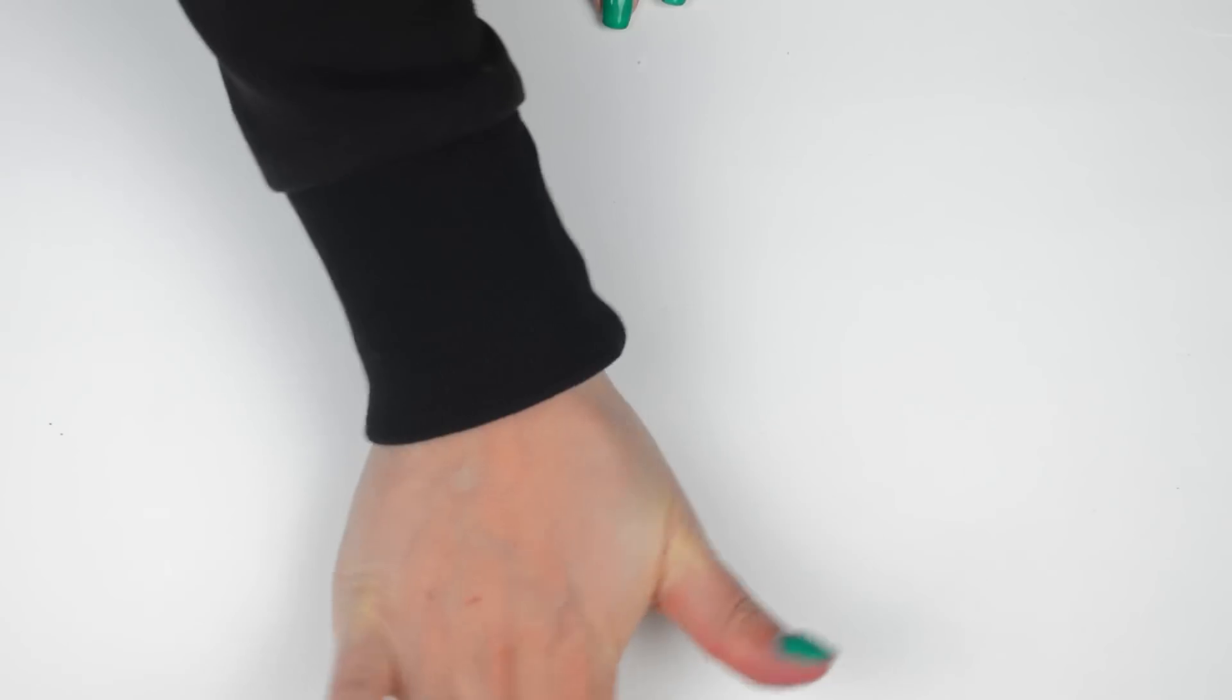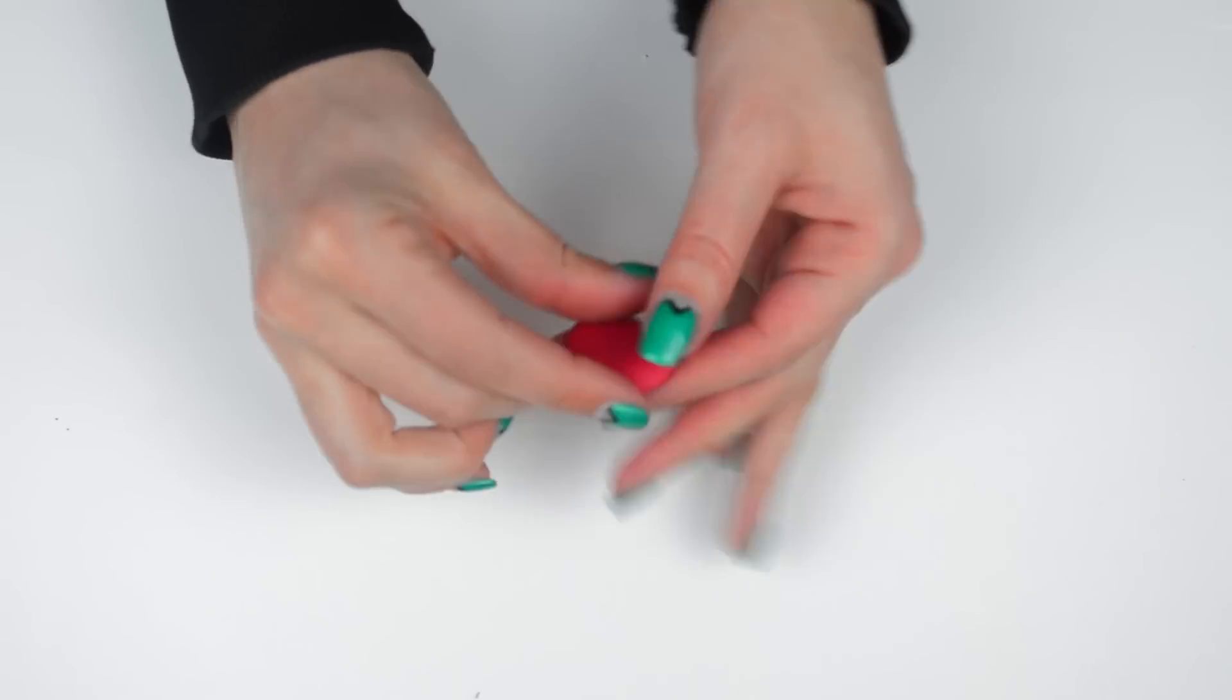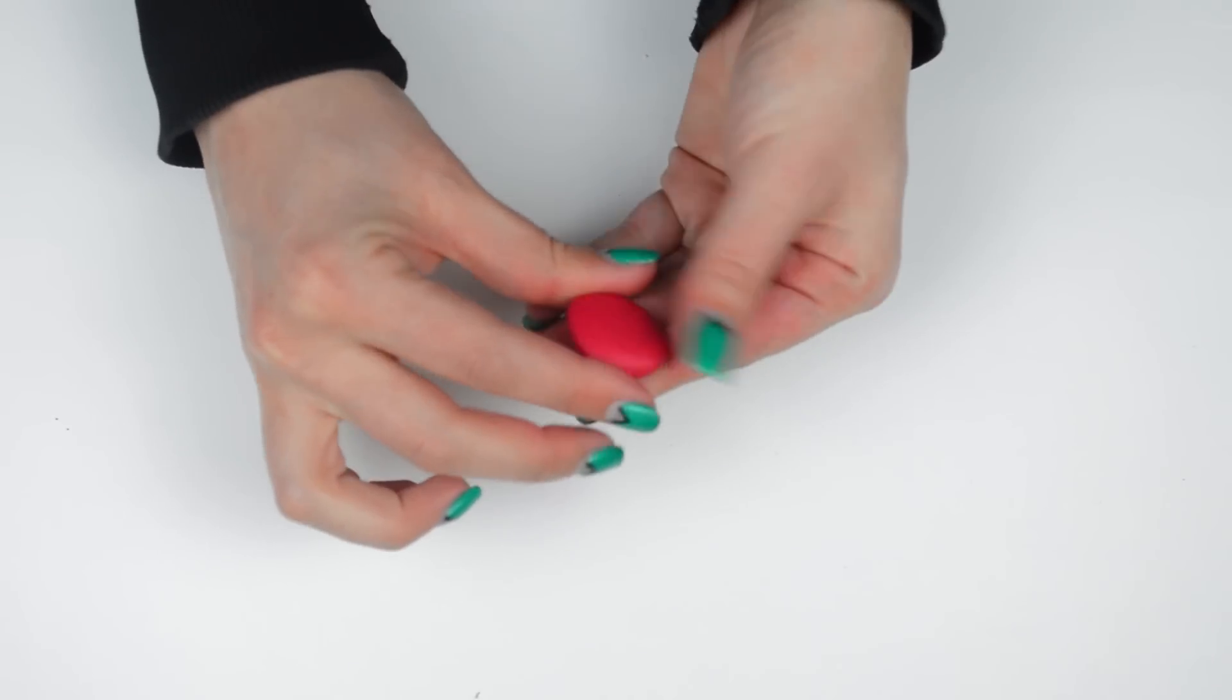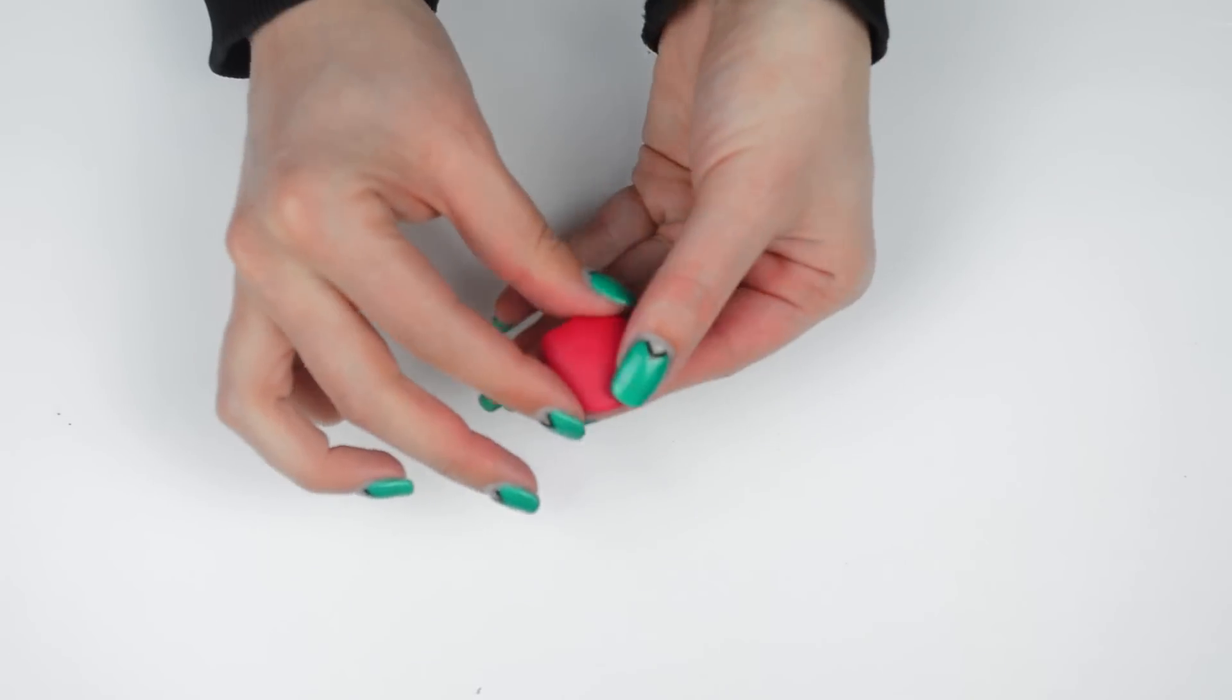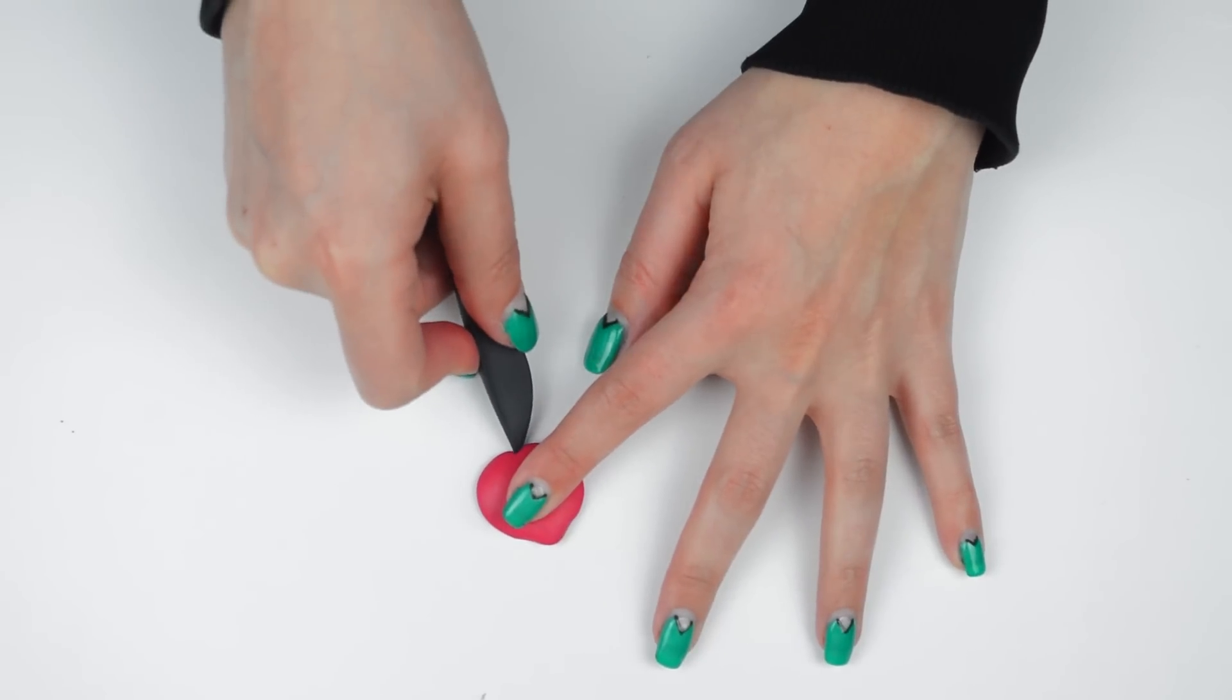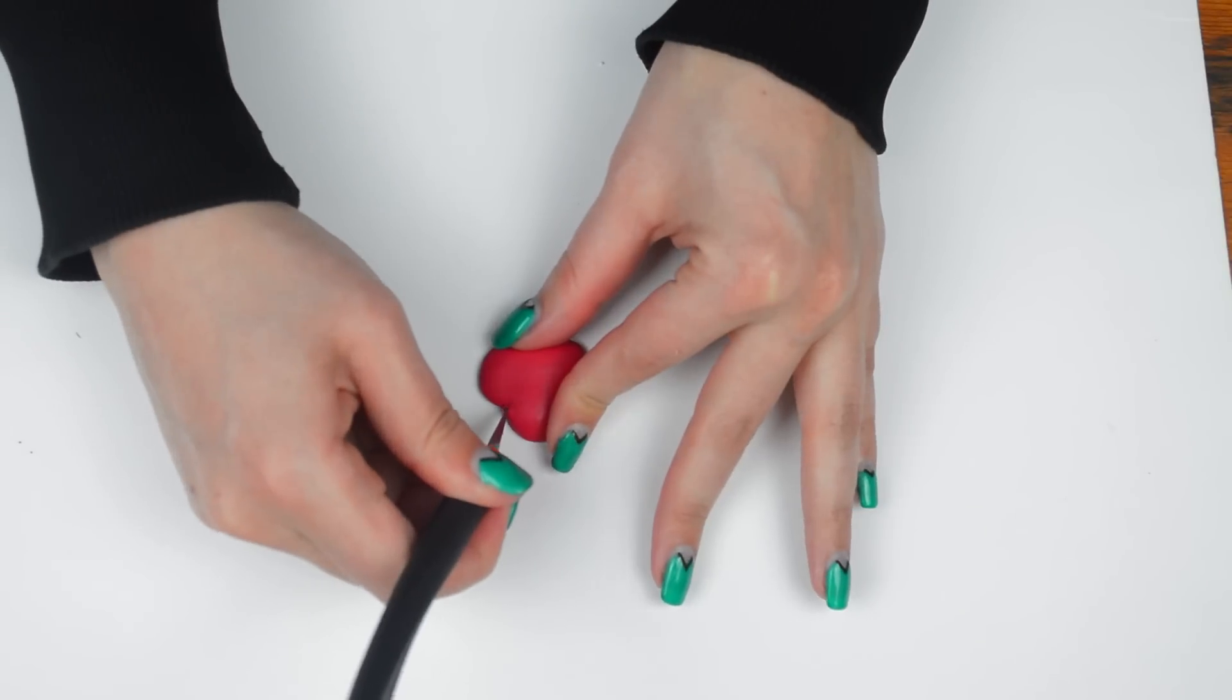For our last DIY, we will be making a pair of heart earrings. Take a ball of clay, flatten it out and pinch on one side. On the opposite side, cut a little triangle and just like that, you have a heart.